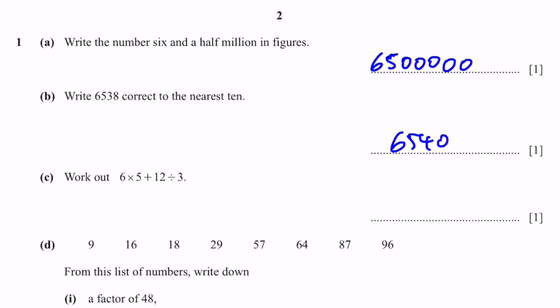Part C: Work out 6 × 5 + 12 ÷ 3. We do multiplication and division first, so it's 30 + 4, which is equal to 34. That's the answer.